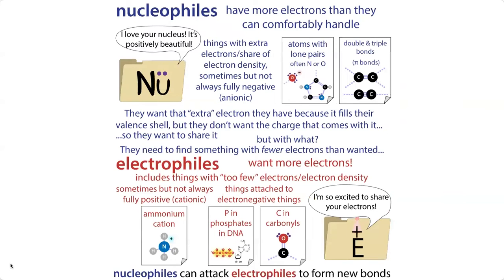If you need a review of nucleophiles and electrophiles, go check that out. But basically, a nucleophile is something that has more electrons or electron density than it wants, and so it's going to seek out something positive to share that electron density with. Positivity is located in protons, which are located in the nucleus. So a nucleophile is going to seek out the nucleus of something that has less electron density — something that's partly or fully positive — something we call an electrophile.